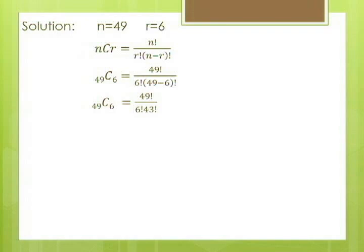Then 49 factorial is equal to the product of positive integers from 49 to 1. Now we have 49 times 48 times 47 times 46 times 45 times 44 times 43 factorial. But since 43 factorial divided by 43 factorial is equal to 1.